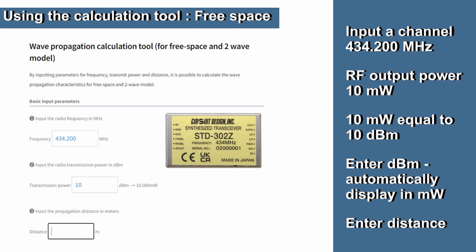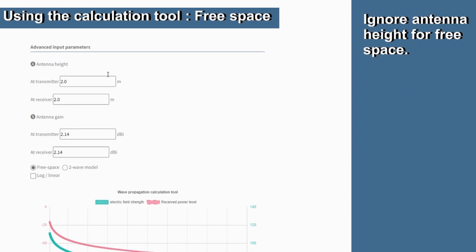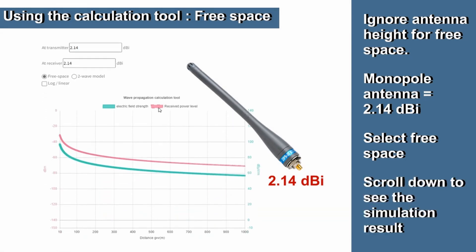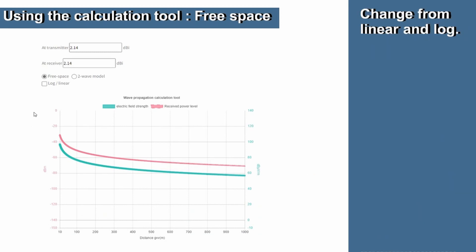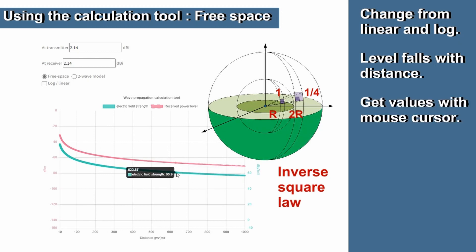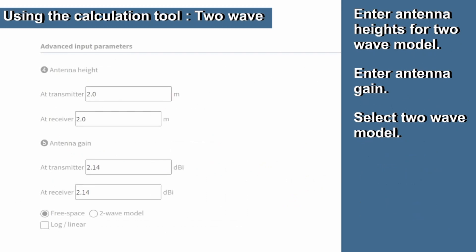If you want to see the result at, let's say, 1km, enter it here. Moving to the advanced input parameters, we are looking at free space so we can ignore the antenna heights. For now we can assume the use of a monopole antenna for both transmitter and receiver, and input the gain of 2.14 here. Then make sure we have free space selected. Scroll down just below and you can see the results of the simulation. By checking here, we can switch between the linear and log graph display. Note how the level decreases with the distance from the transmitter. We can place the mouse anywhere on these lines to get the received level. One line shows electric field strength in dBmV per meter at the receiver; the other line shows the received power level in dBm at the receiver.